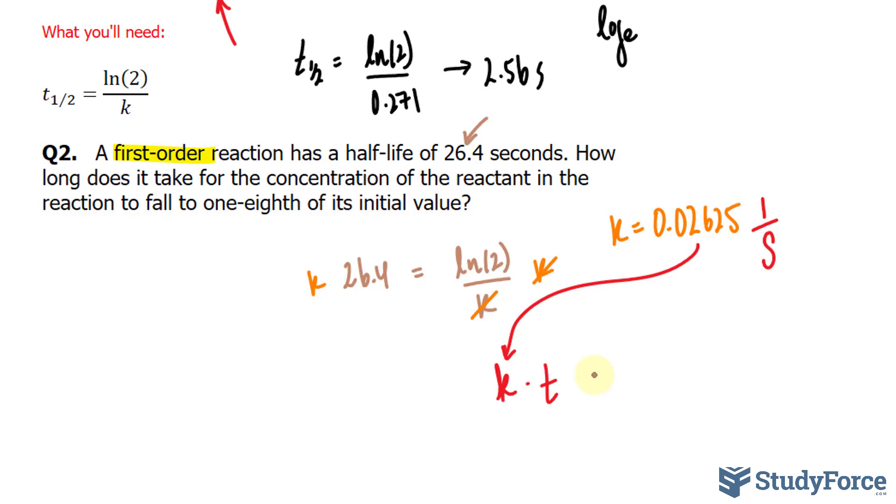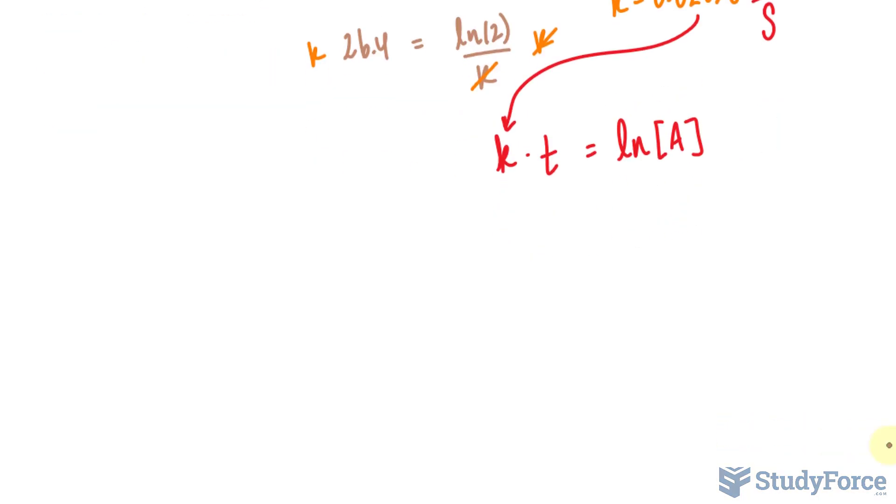Let me show you what I mean. So I'll take my constant, this number, I'll replace it with K eventually, and we multiply it by the time and that's equal to ln of the concentration. So ln of concentration A. And that's specifically what you do for first order reactions.